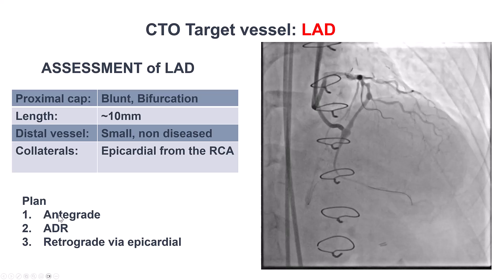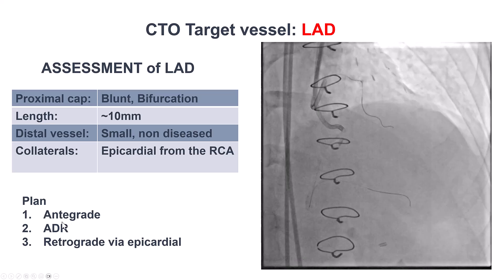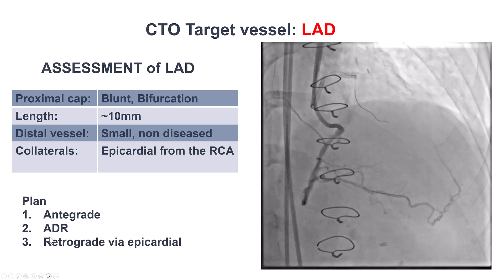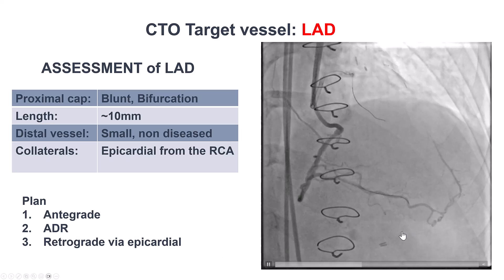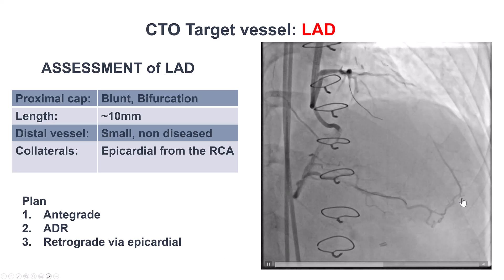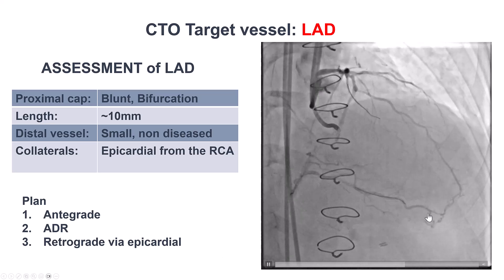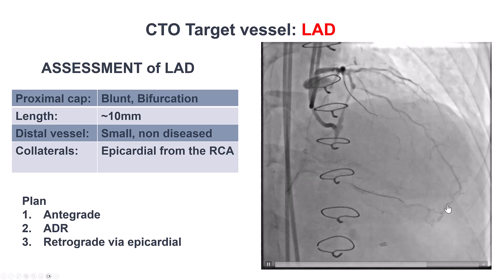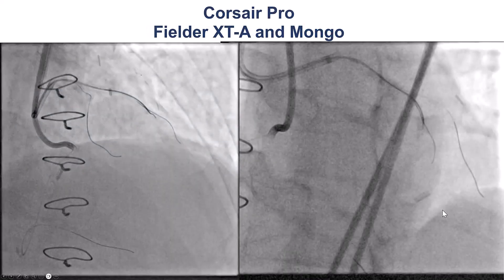Based on that, the plan was to go antegrade. If that failed, to go dissection and reentry. And if that failed, attempt the retrograde, although with a high threshold because of the small size and tortuosity.